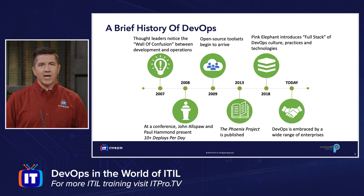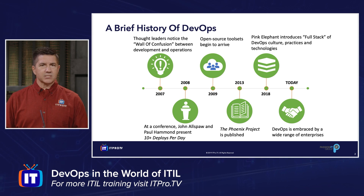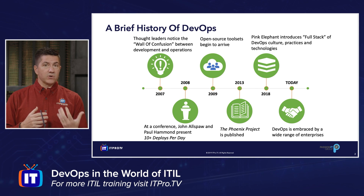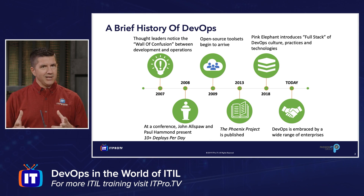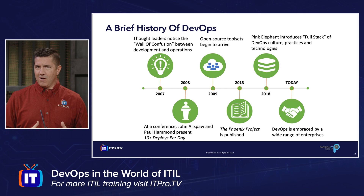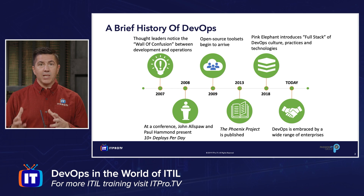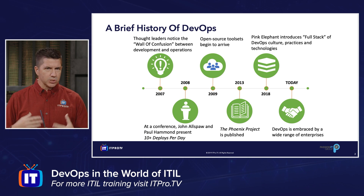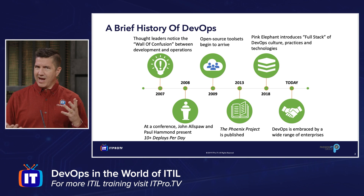So around 2007, you had some thought leaders out there — people like Patrick Dubois — who began to first discuss and articulate that this was going on. It was labeled by some the 'wall of confusion.' In fact, this inspired others to also think through solutions to this problem on how we can break down that wall.